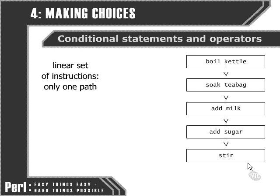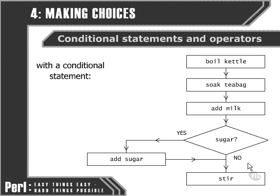If we introduce a conditional statement, we're able to make choices depending on some input. We could prompt the user to see whether they want sugar, and then based on the answer that they give, we can put sugar or not into their cup of tea. This is a very simple example, but it shows the kind of thing that we need to be aiming for when we put conditional statements into our programs — that kind of flexibility that offers our facility to cope with a broader variety of situations.